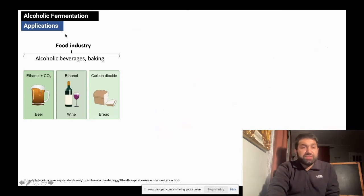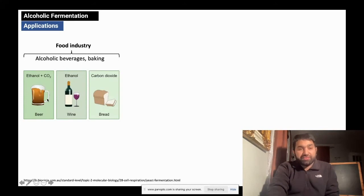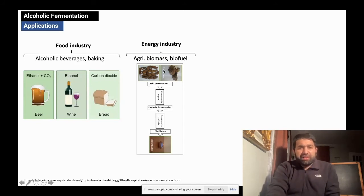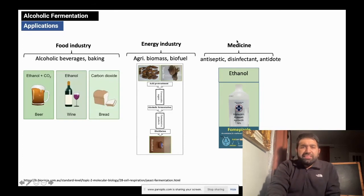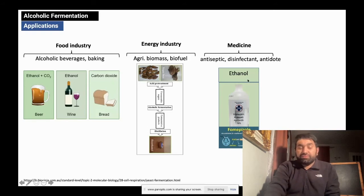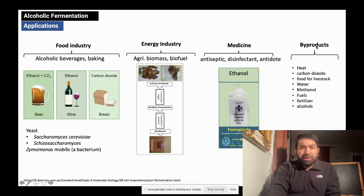Regarding applications, the food industry comes to mind first. Both the production of alcoholic beverages and the baking process rely on alcoholic fermentation — humans have a long history of using it to produce beer, wine, and bread. In the energy industry, there is tremendous potential to produce biofuel from agricultural biomass such as sugar beet. In medicine, alcohol offers antiseptic and disinfectant properties, and antidotes are also formed through this process. Other byproducts such as fertilizers and fuels are also derived through alcoholic fermentation.